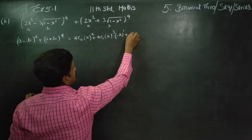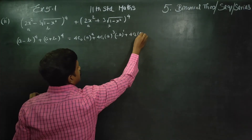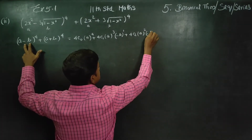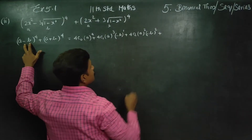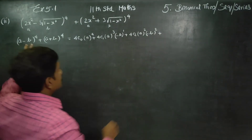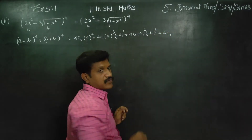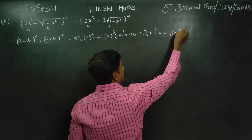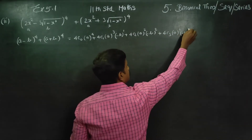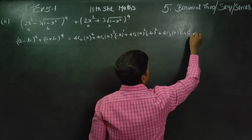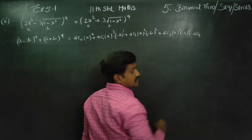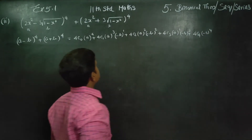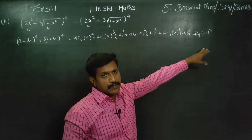Continuing: plus 4C2 times a squared times (minus b) squared, plus 4C3 times a times (minus b) cubed, and lastly plus 4C4 times (minus b) whole power 4. Here the first term starts with a and the last with b.